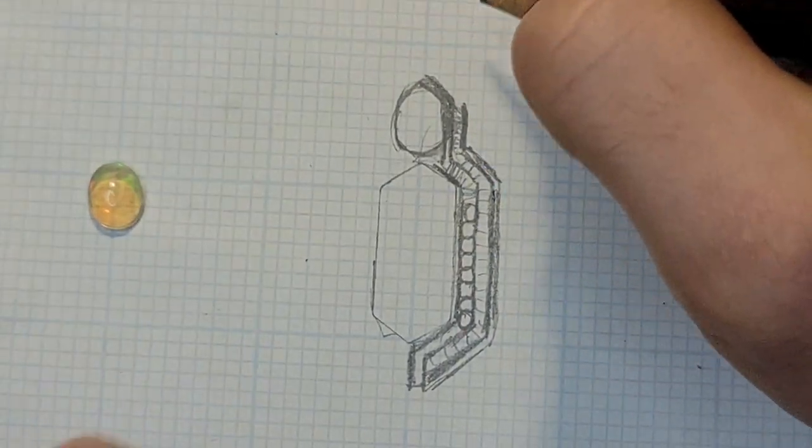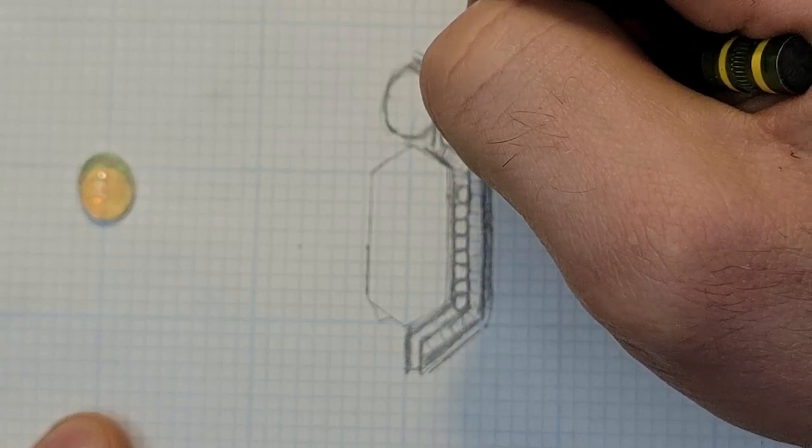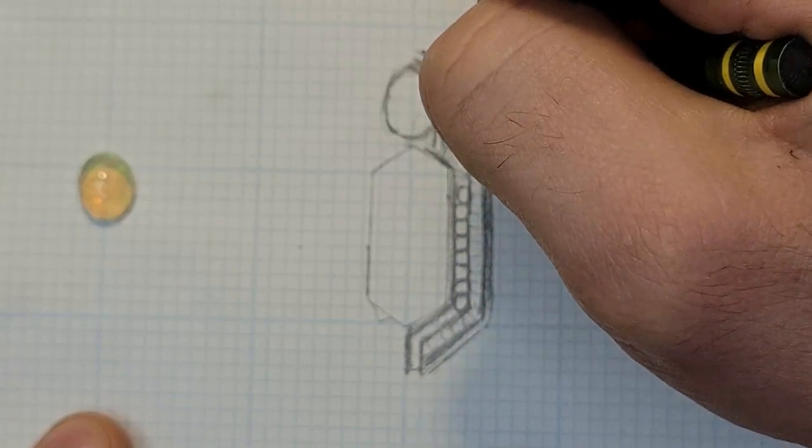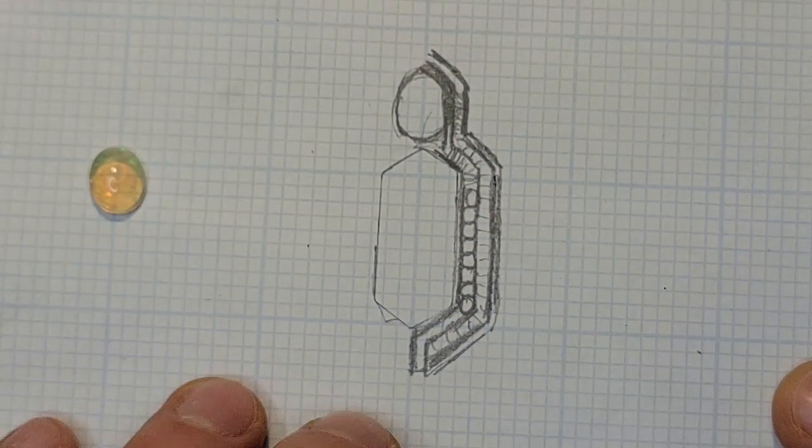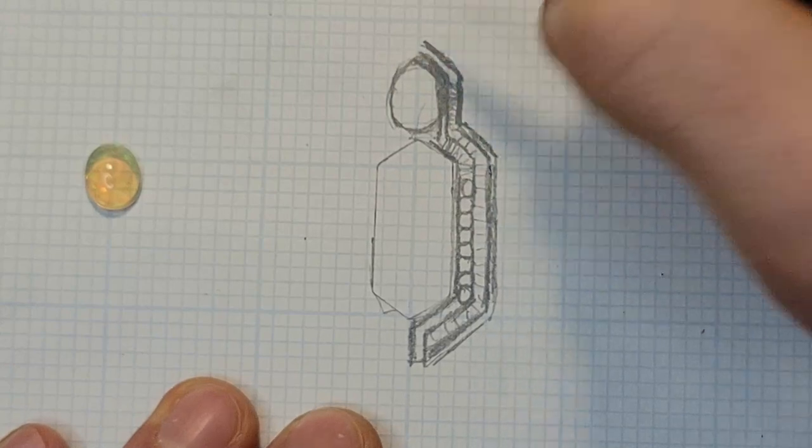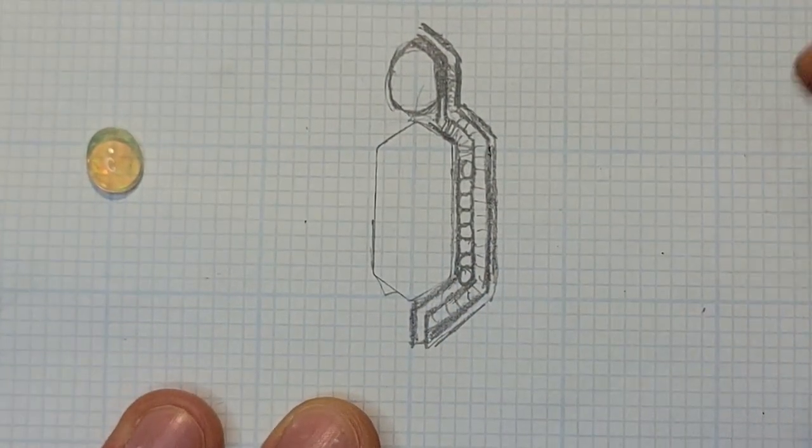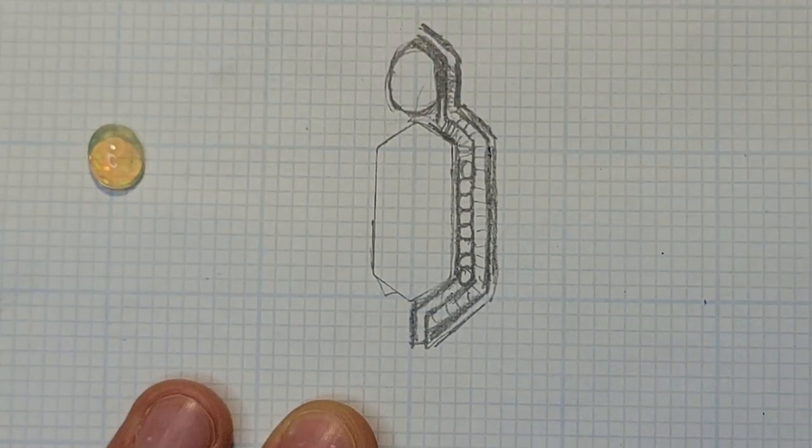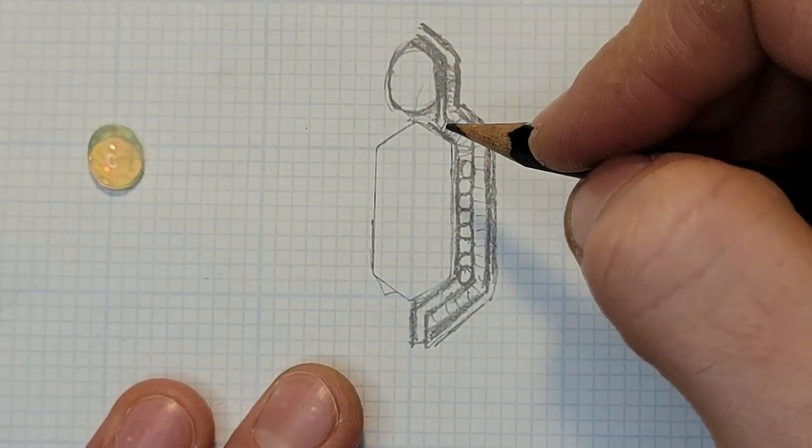I might also do a full backplate for this piece. If you all want to see the backplate process, go ahead and let me know in the comments. I would love to show you all another complex sort of thing. I backplate the pieces with silver sheet metal, and so it's not too crazy. If you want to see that process, let me know in the comments of this video.